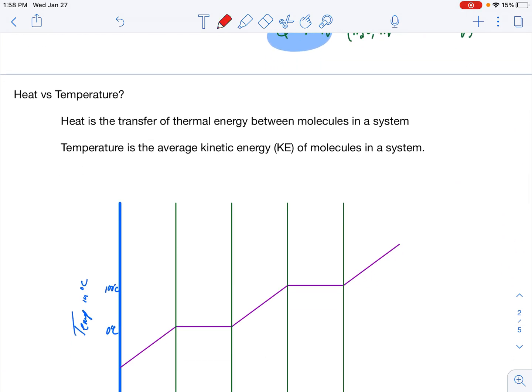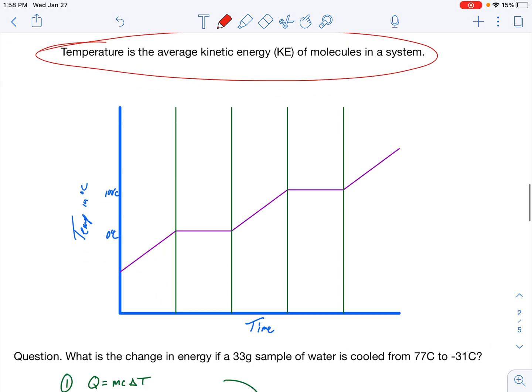Heat versus temperature, just so we're all on the same page. Heat is a transfer of thermal energy between molecules in a system, and temperature is the average kinetic energy of molecules in a system. Please, kinetic energy and temperature, link those two in your brain, and we're going to see that all year long.